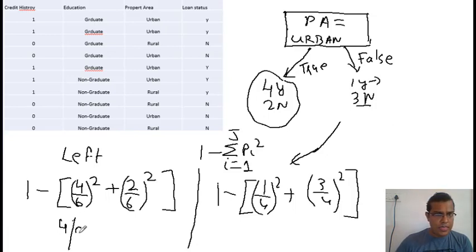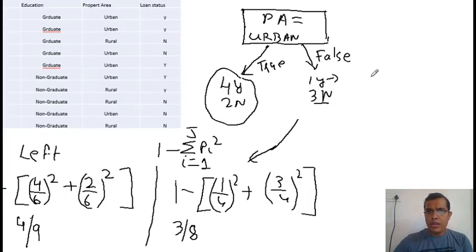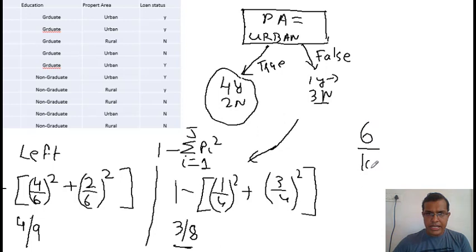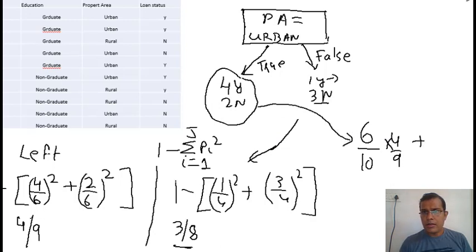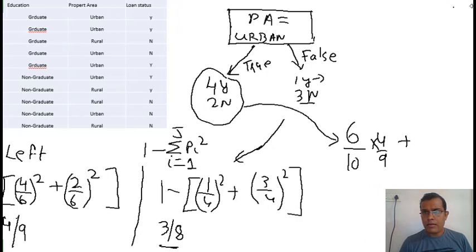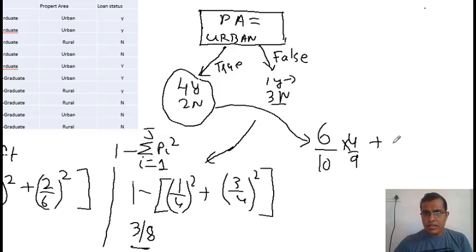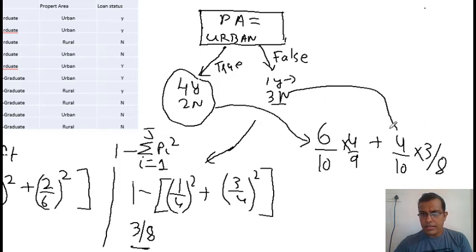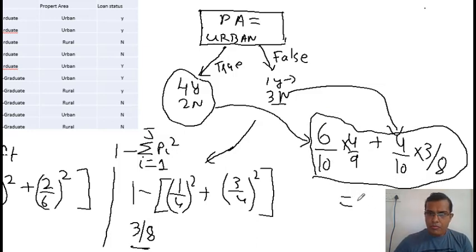Now I take the weighted score. From the left side, 4/9, and from the right side, 3/8. The weighted Gini score is: (6/10) × (4/9) + (4/10) × (3/8). The six comes from the six left-side records and four from the right-side records, both out of ten total. I have already done this calculation and the value comes out to be 0.41. So when property area is taken as the variable, the Gini score is 0.41.